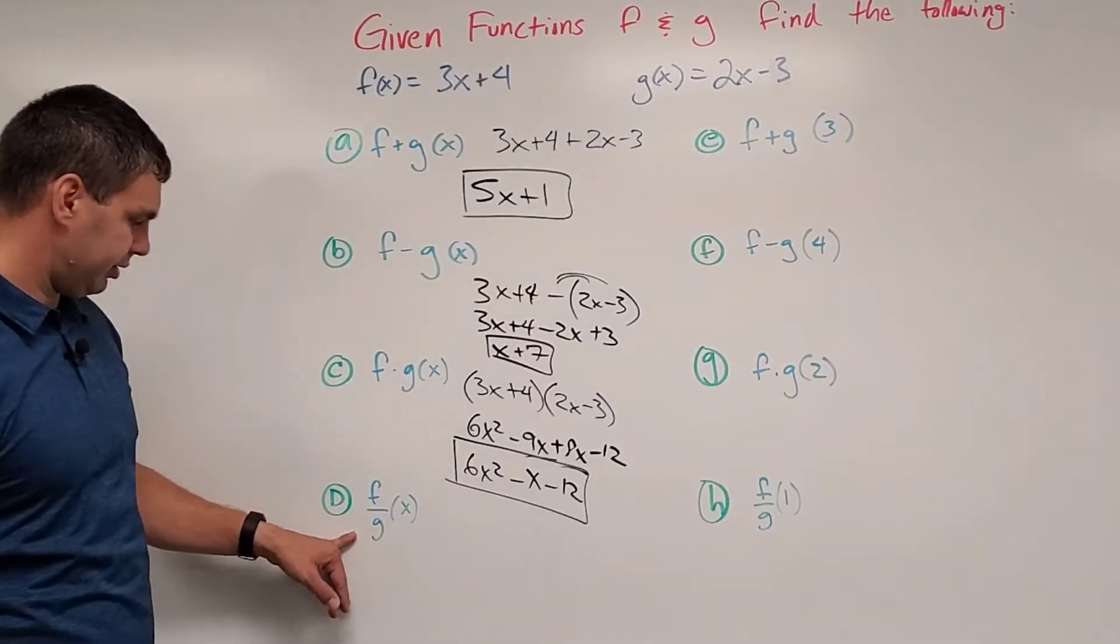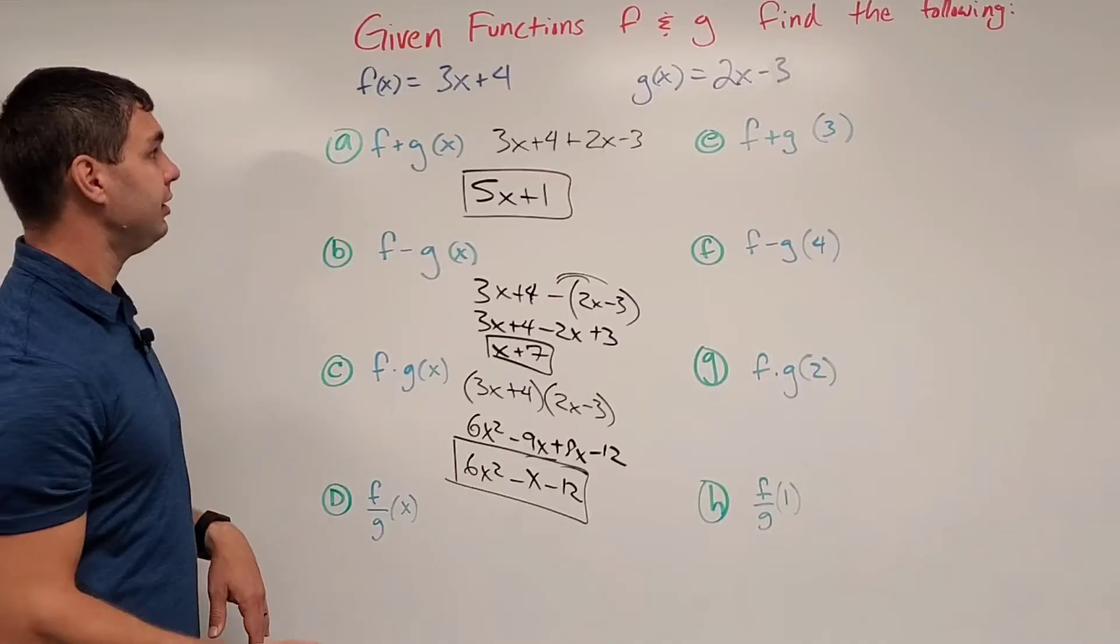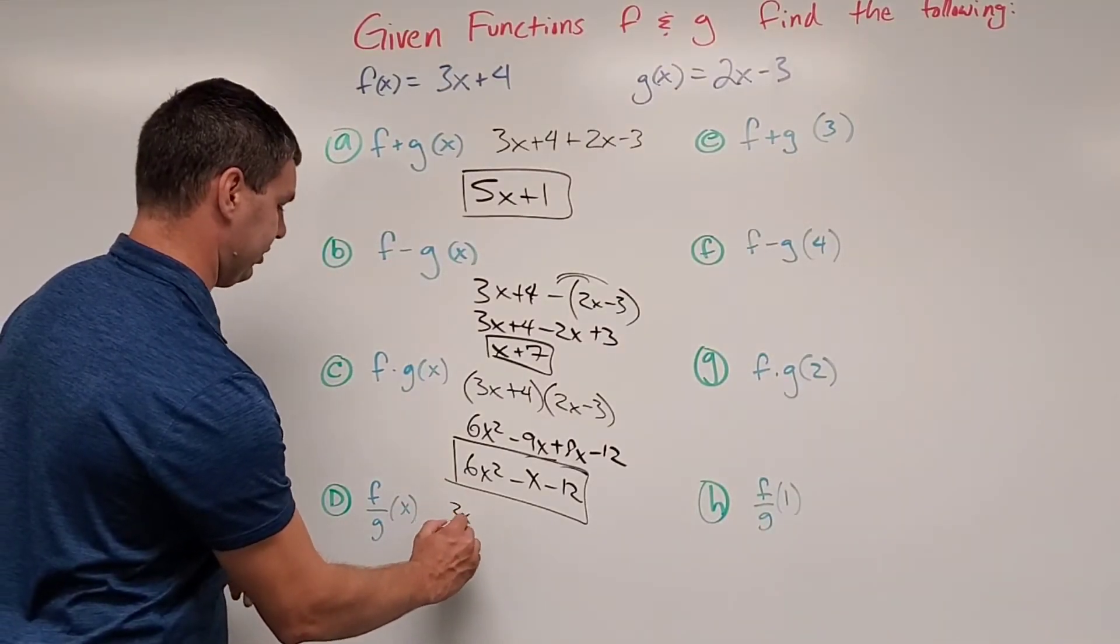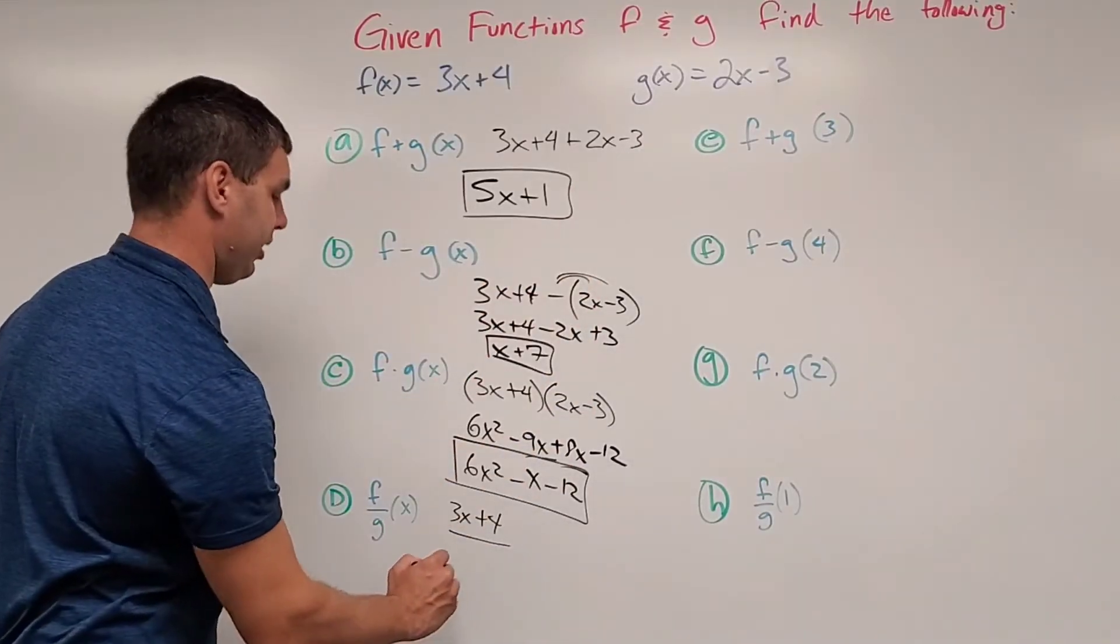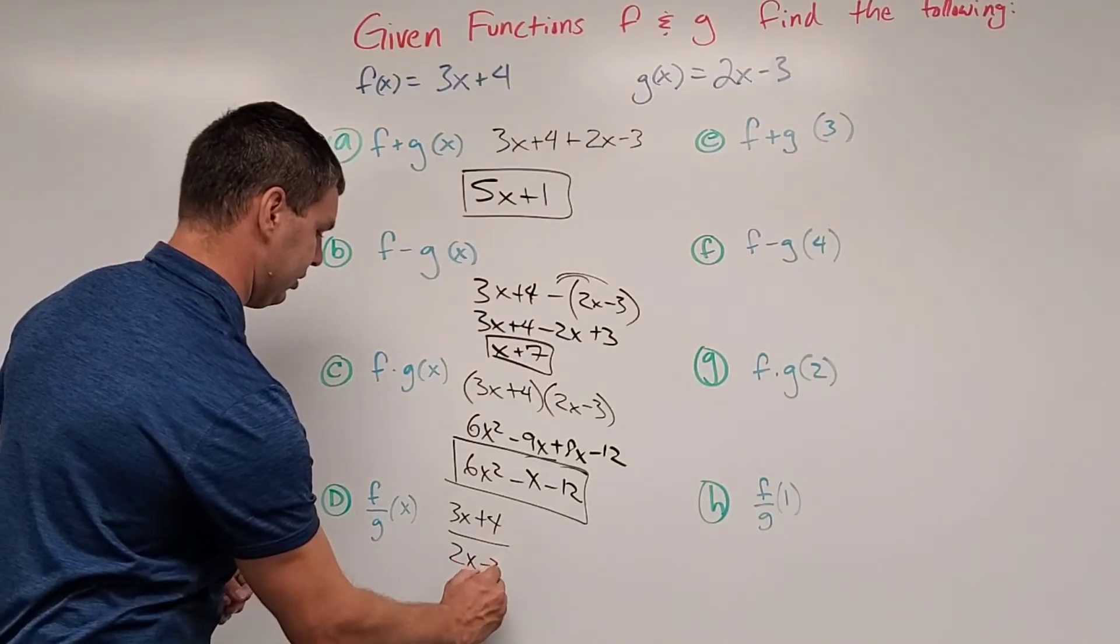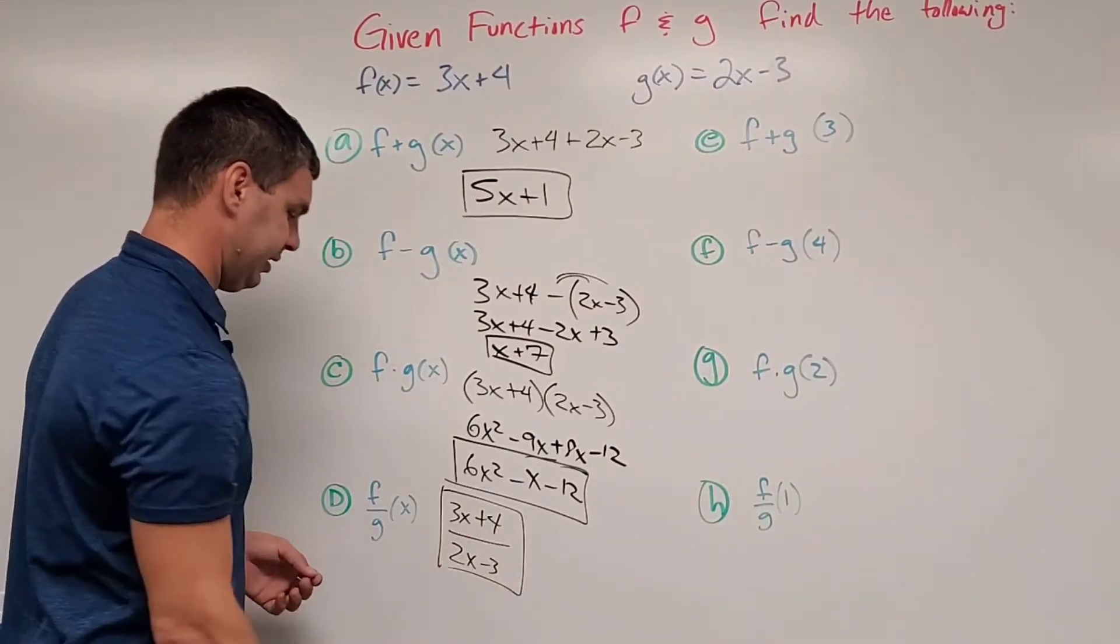Okay, and then letter d, f divided by g of x. All you really have to do is put your f of x, 3x plus 4 over your g of x, 2x minus 3. Okay, and there's really no other simplifying that can happen in this one. So that is the answer.